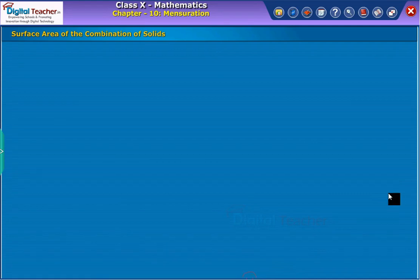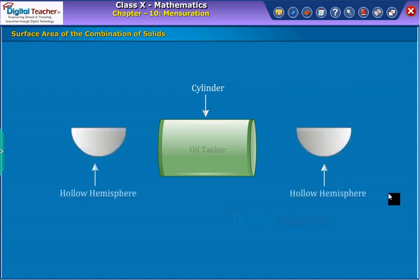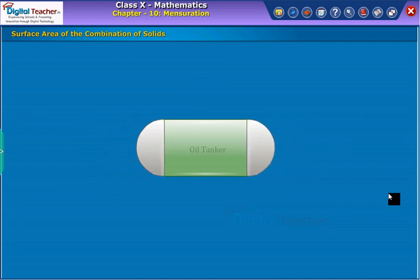To understand the surface area of the combination of solids, let us consider an example of an oil tanker. Here, to form the shape of an oil tanker, we need to consider a cylinder and two solid hemispheres. When these two hemispheres are stuck at either end of the cylinder, we obtain as shown.